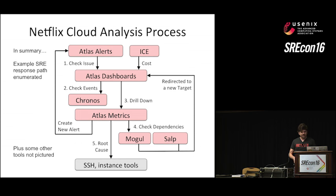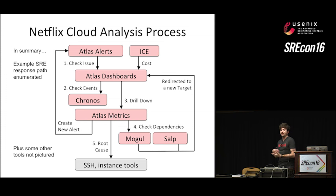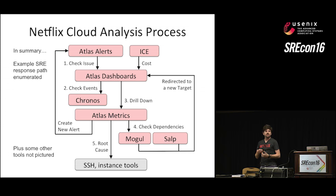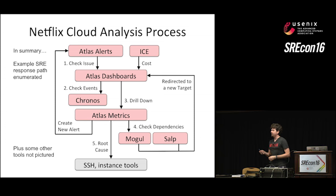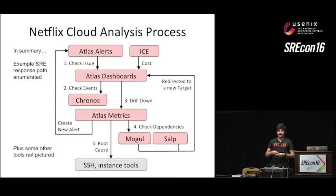I've summarized the Netflix cloud analysis process. We have a central monitoring system called Atlas, which we've open sourced — that gives us an alert and takes us to various Atlas dashboards to understand impact. Kronos is our system for event logging to find out what happened at a given time. Then getting down to custom metrics via Atlas, with tools like Mogul and Solp to check dependencies. As a last resort, we can SSH onto an instance and look at Java logs and system logs.